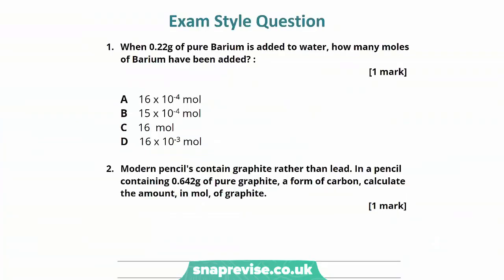The first question is a multiple choice question. It says when 0.22 grams of barium is added to water, how many moles of barium have been added? Essentially what this question is asking us is, in 0.22 grams of barium, how many moles are there? So if we think about that triangle that we had in our previous slide, we had number of moles, mass and molar mass. We want to find the number of moles, so we can cover that. So the equation we'll therefore be using is number of moles is equal to the mass divided by the molar mass.